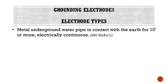Looking at our electrode types individually: A1, our metal underground water pipe — metal underground water pipe in contact with the Earth for 10 feet or more, and it is electrically continuous. So even if we do have metal underground water pipe, it has to be in direct contact with the Earth for at least 10 feet. The whole purpose of a grounding electrode is to make connection to the Earth — that is our goal. We want this electrode to be a really good connection to the Earth.